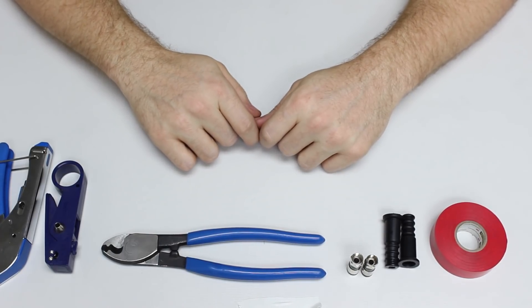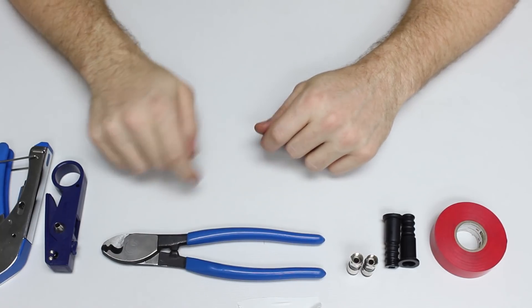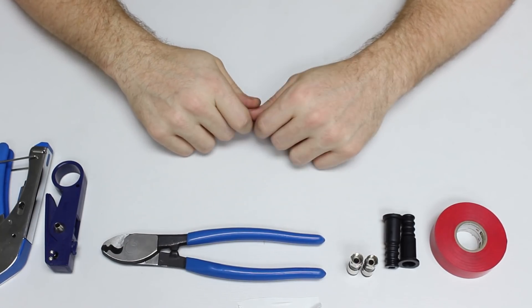During this period of instruction we're going to go over the basic how-to on making the termination ends for our RG6 quad shield coax cable.